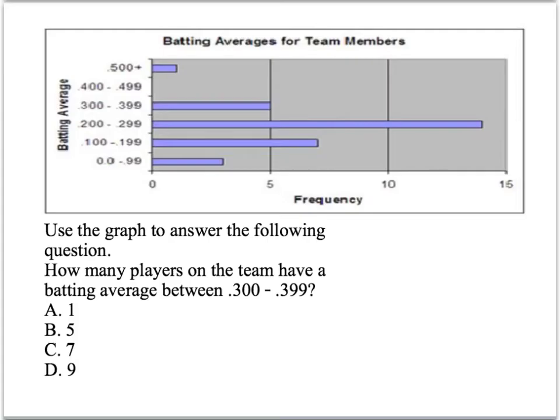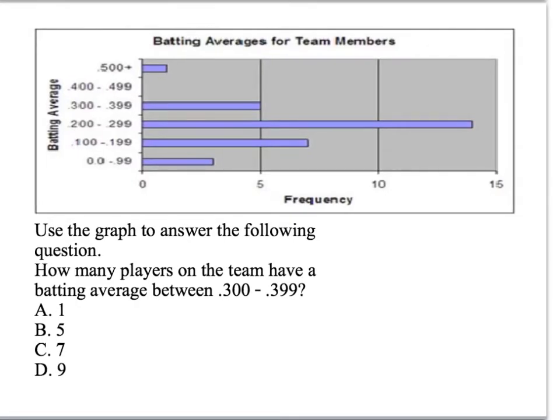First one, straightforward. Use the graph to answer the following question. How many players on the team have a batting average between .300 and .399? So all you do is come over here and look for .300 and .39, draw a line down, and your answer is 5. Straightforward.